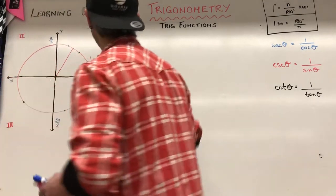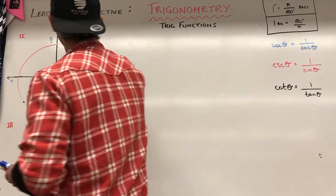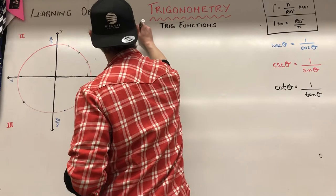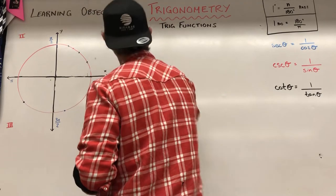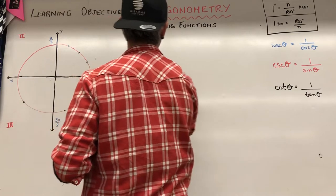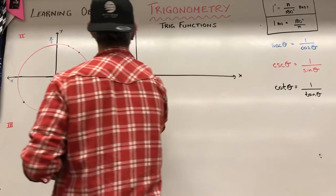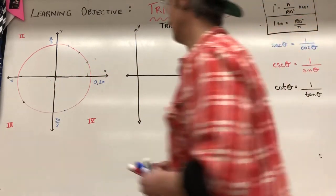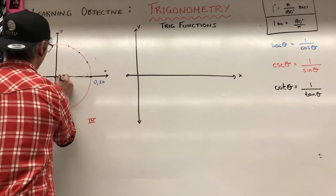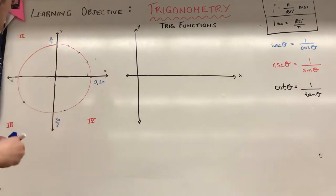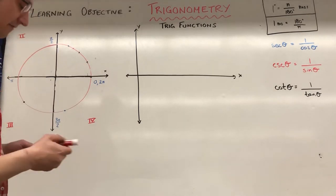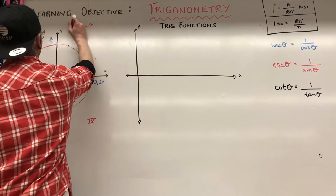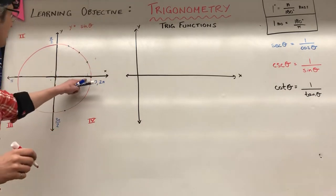So what we can do is we can actually graph what each of those graphs looks like. So I'm going to make a graph. Now it's going to go, really we're just going to focus on the positive x for now. Let's say I took a terminal arm and I started right here at my initial arm point. And I want to just graph the graph of sine of theta, y equals sine of theta.